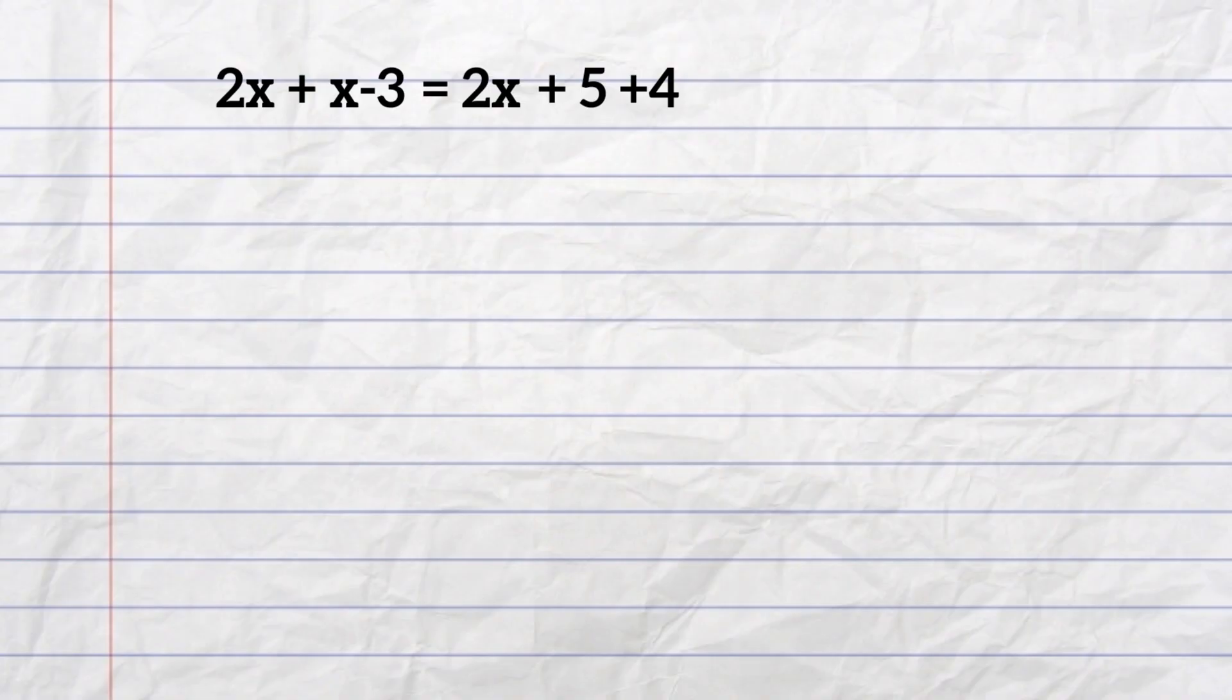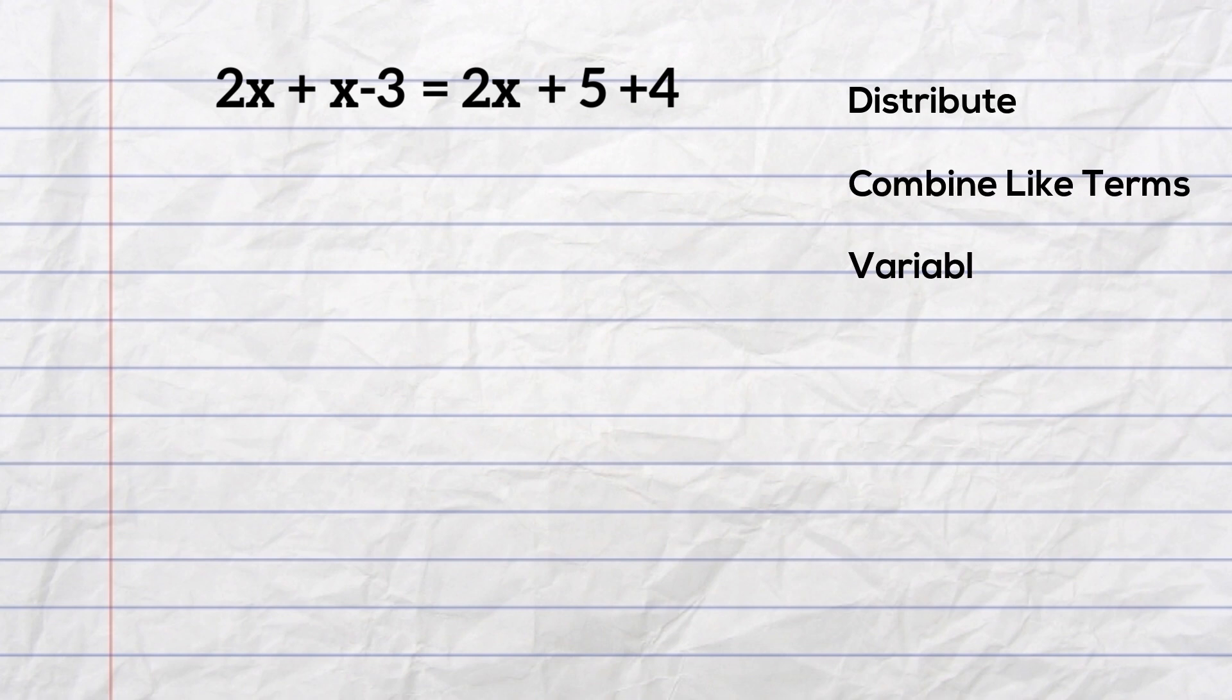When solving equations, you can follow the following steps: distribute first, then combine like terms, then move variables to the left, and then numbers or constants to the right.